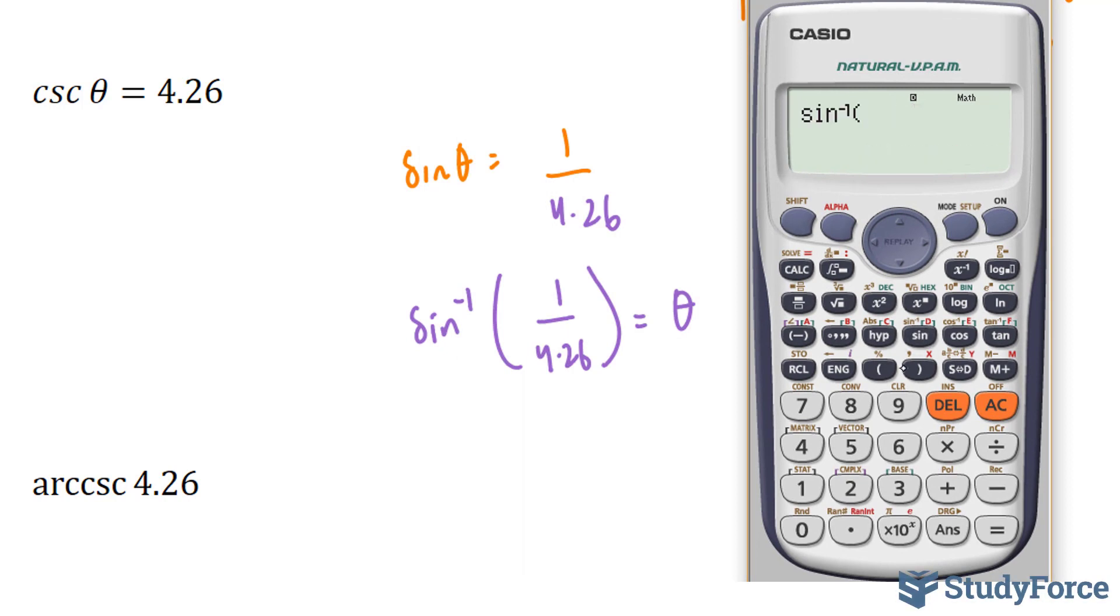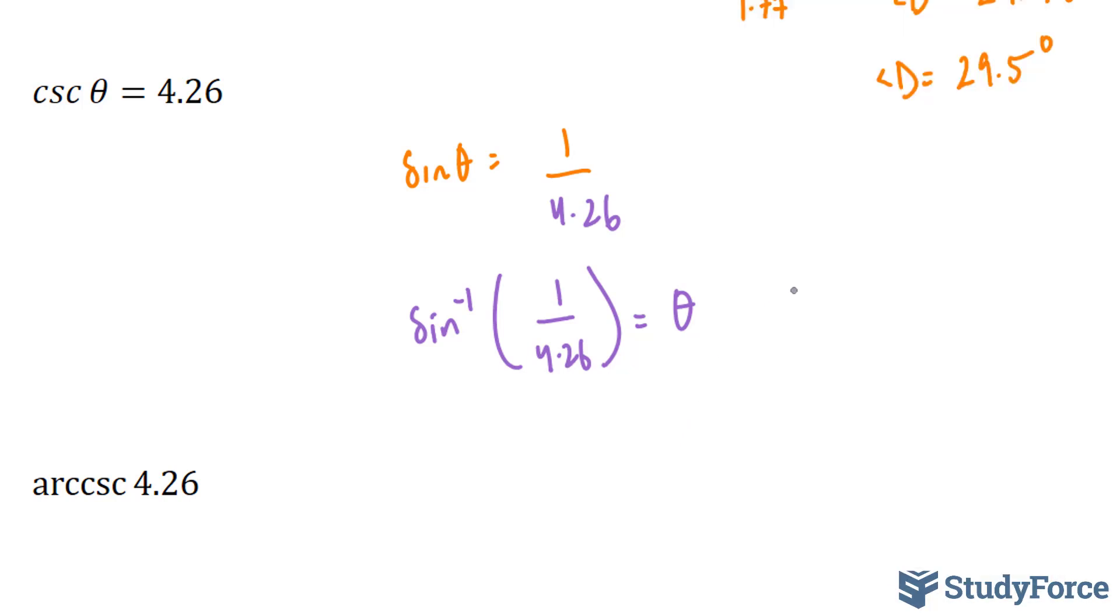Shift, the inverse of sine appears, 1 over 4.26, gives us 13.57 degrees, 13.57 degrees. Now of course, this is three significant digits, so to retain the correct amount, the answer would be 13.6 degrees.